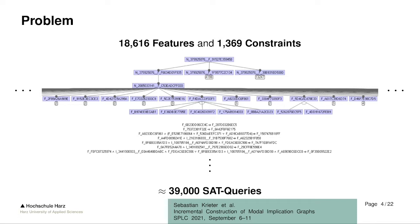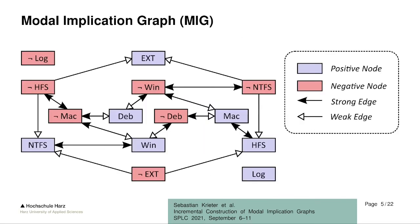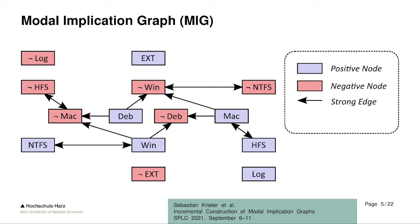What can we do about this? In a previous paper, we came up with a new data structure called the Modal Implication Graph, which looks like this. It consists of different nodes that represent the selection states of all the features — for example, the Windows feature when we select it and when we deselect it. From these nodes, we have different edges. We have strong edges, which act like regular implications: if you select the feature Windows, you also have to select Debian and NTFS and so on. Everything reachable via a path of only strong edges must be selected.